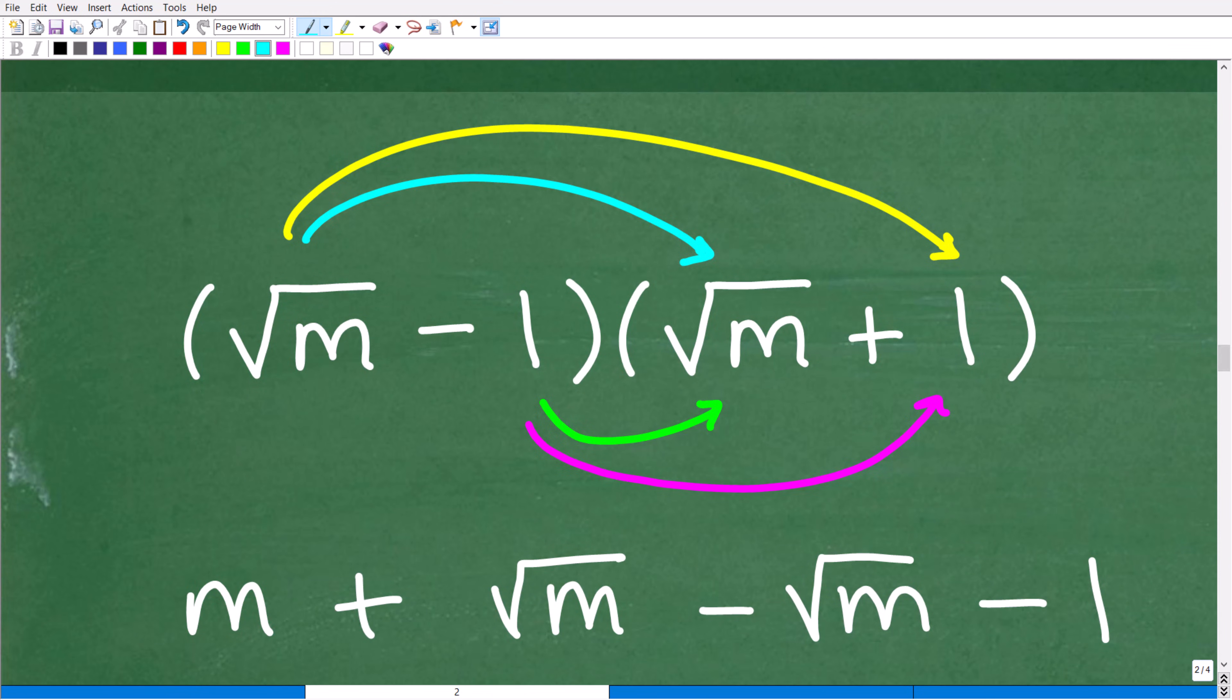So the FOIL method is first, outer, inner, last. It's just kind of a special way to multiply binomials. So the first is the first term. So this is the first terms right here in each of these respective binomials. So the square root of m times the square root of m would be like our F, our first. First, so the square root of m times the square root of m is the square root of m squared or m. So that is our answer right there.